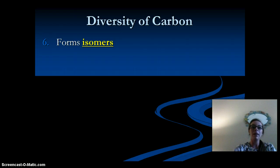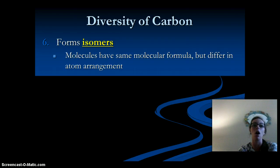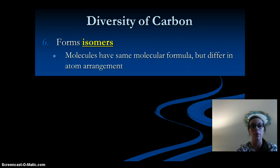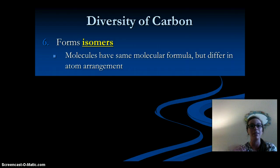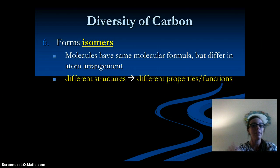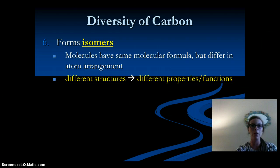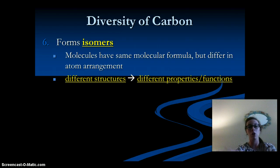Carbon diversity continued — carbon compounds can form isomers. Isomers are molecules that have the same molecular formula but differ in atom arrangement. They have the same number of each atom, but differ in the arrangement of the molecule. Different structures lead to different functions or different properties.